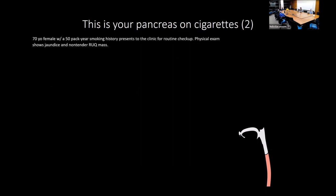A 70-year-old female with a 50-pack-year smoking history presenting with jaundice and a non-tender right upper quadrant mass — this is pancreatic adenocarcinoma. Painless jaundice is a classic presentation. Risk factors include smoking history, chronic pancreatitis, high alcohol consumption, and increasing age.